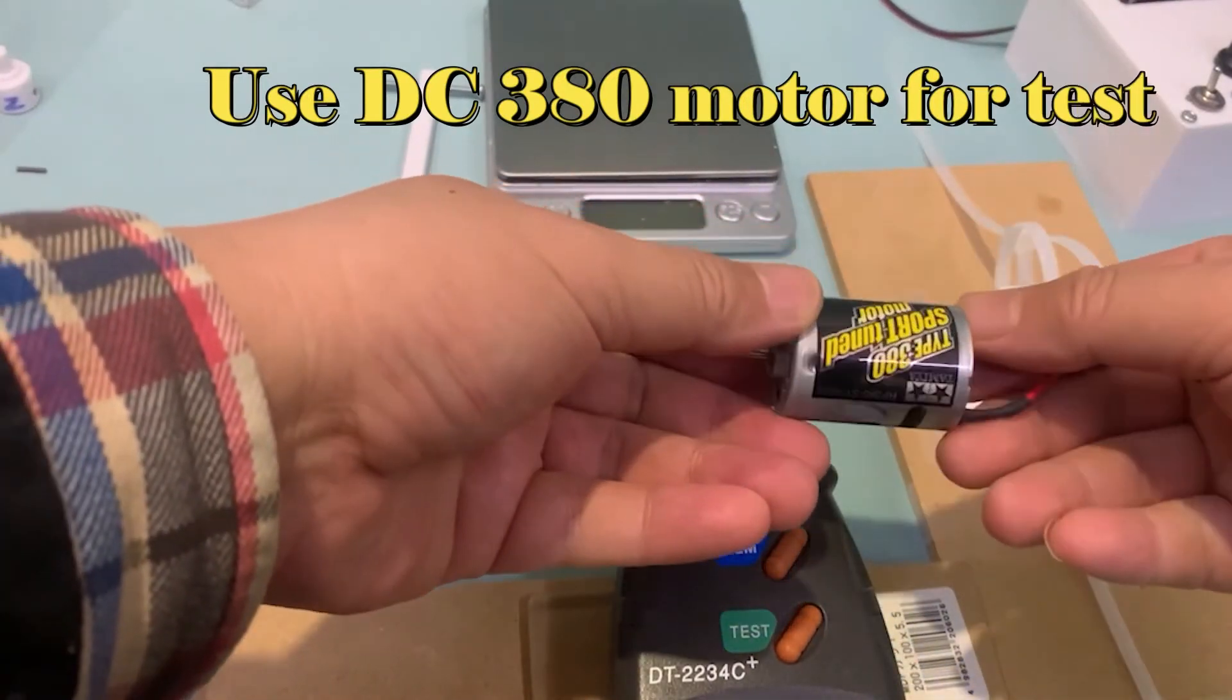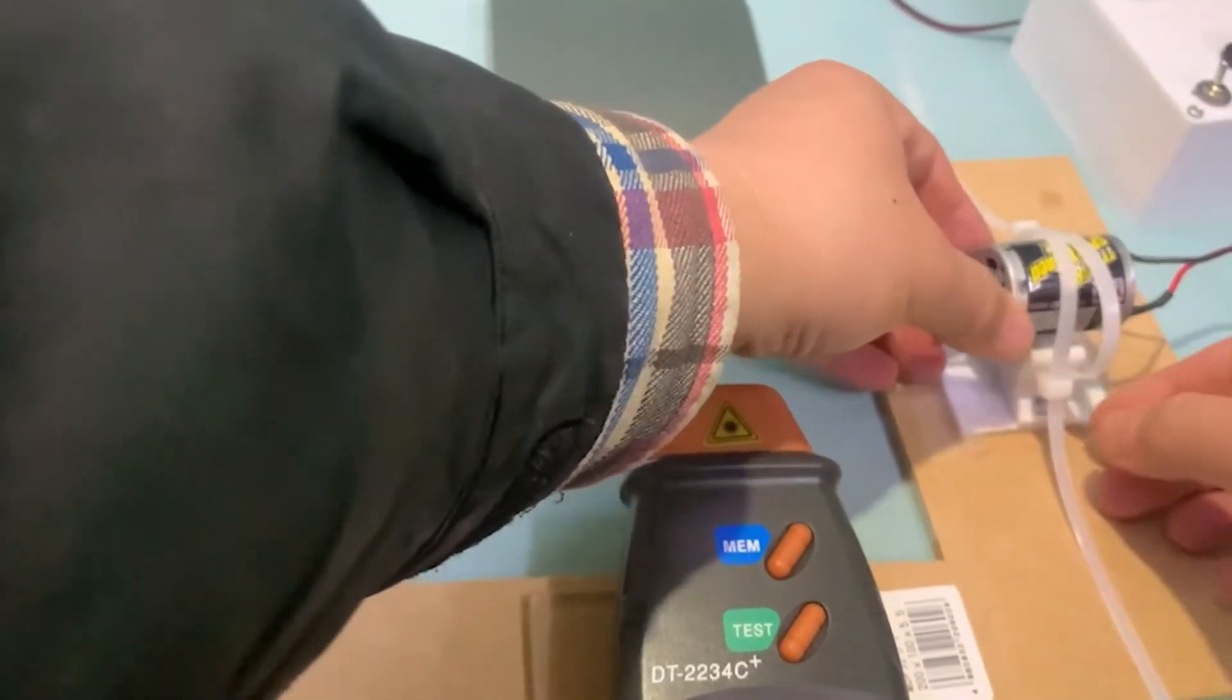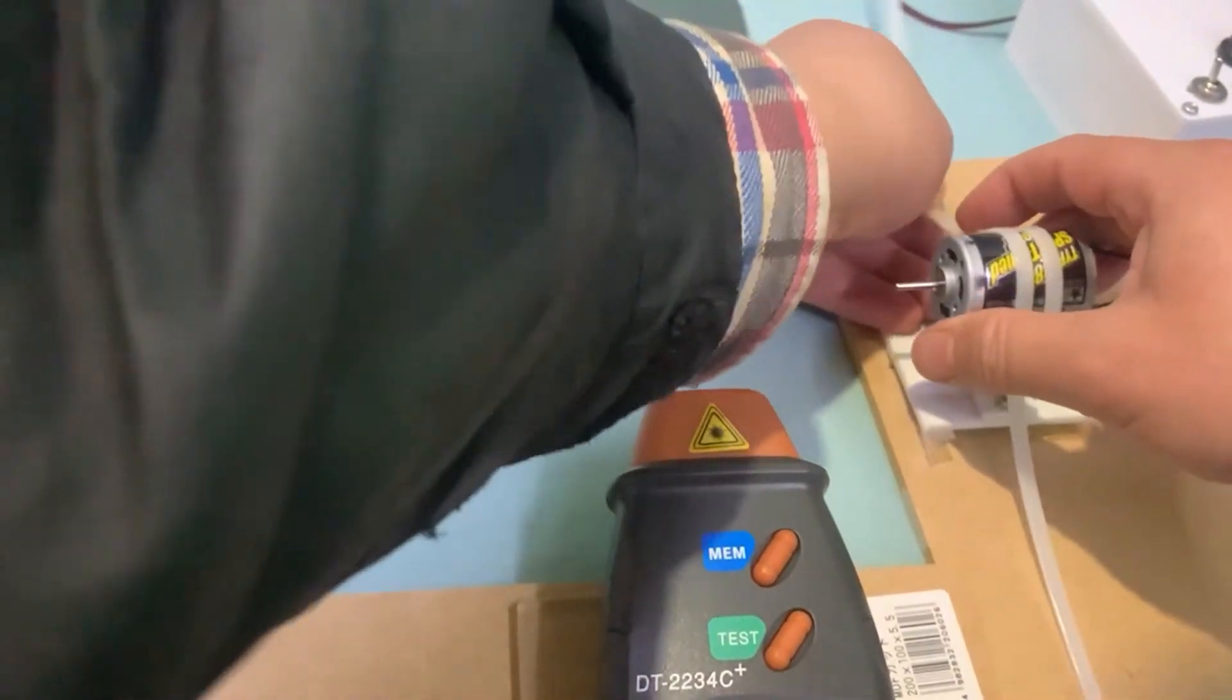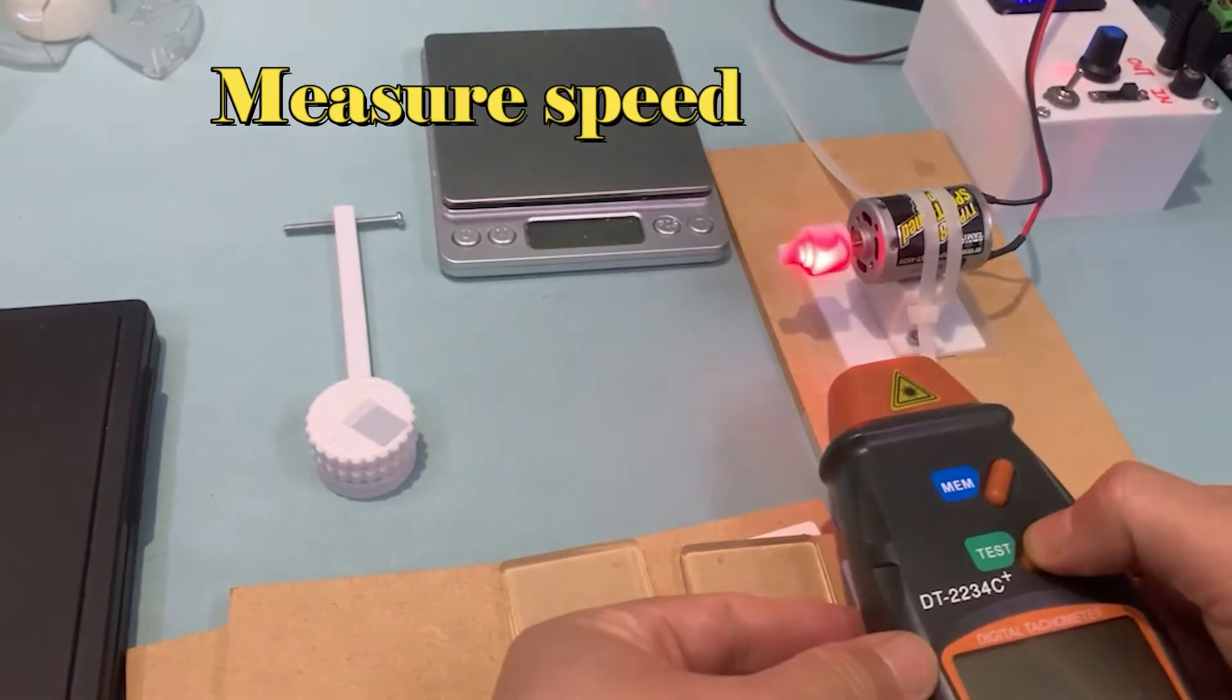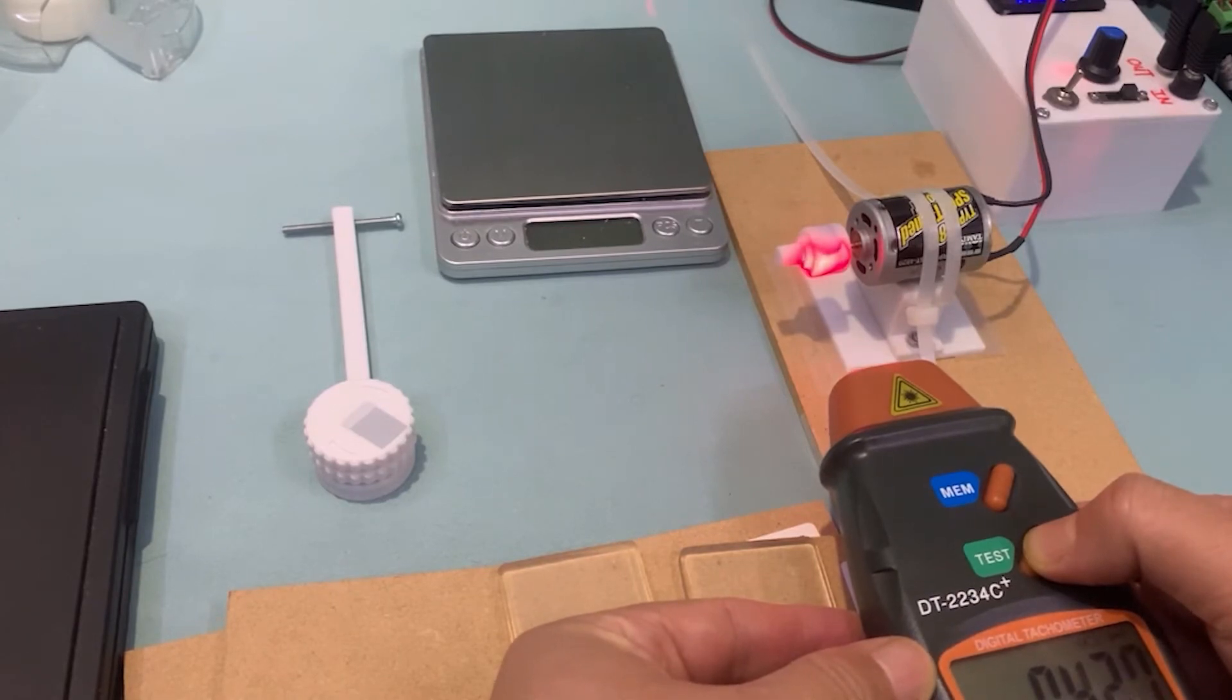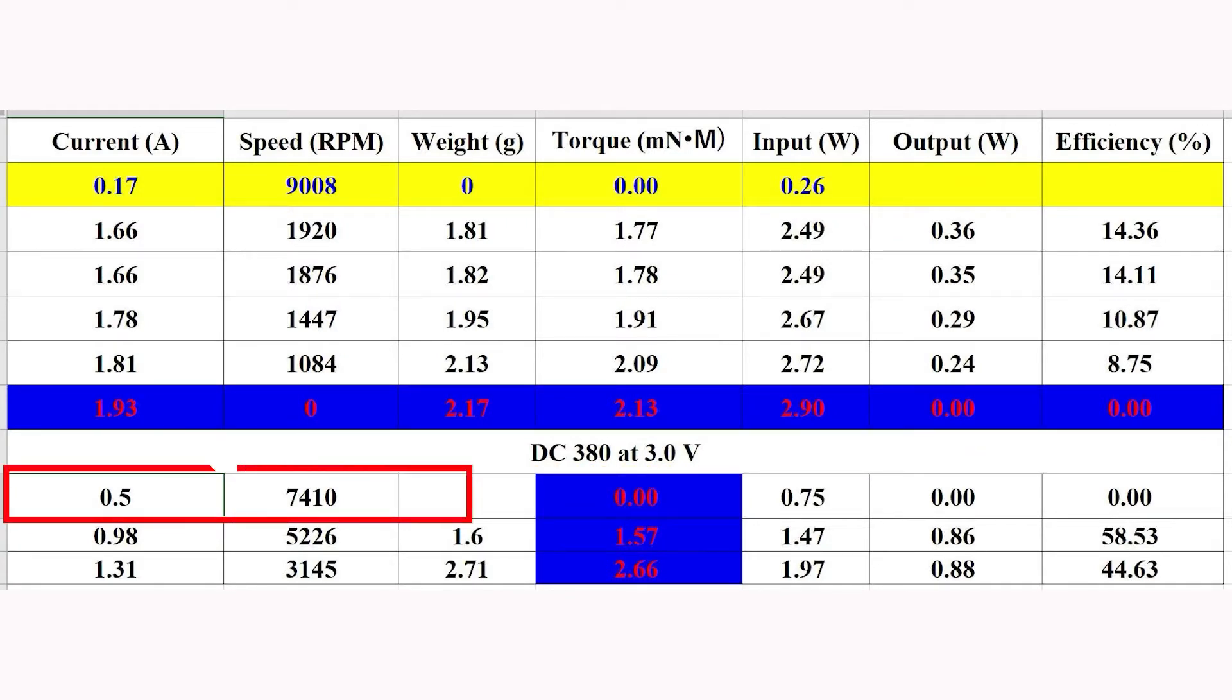I use a DC-300A motor for a test. At the voltage 3.0V, the no-load speed of the motor is 7400 rpm.